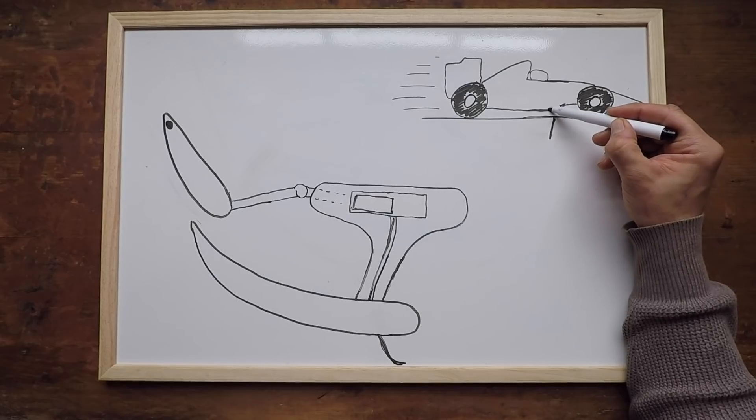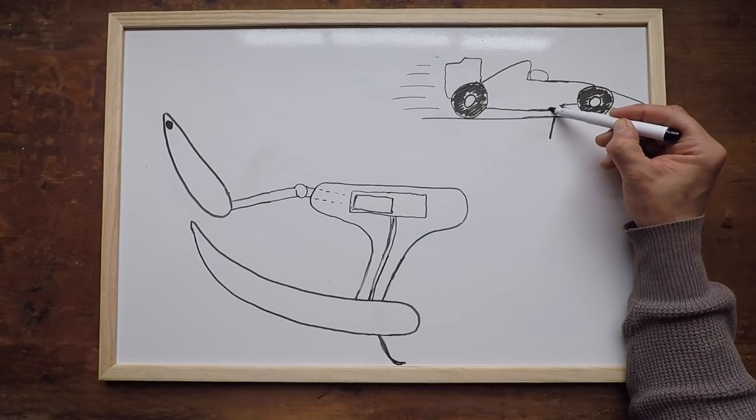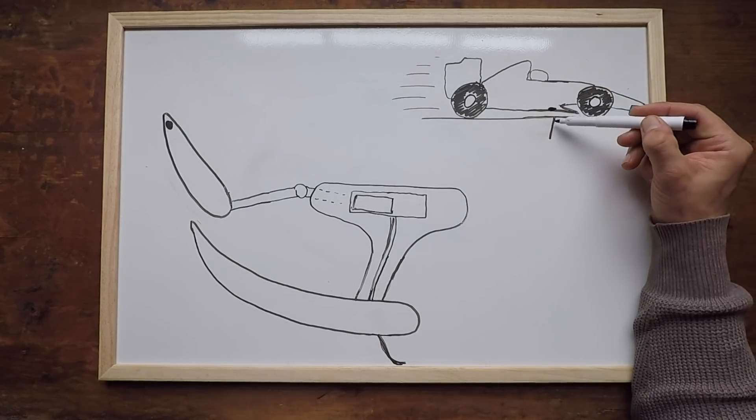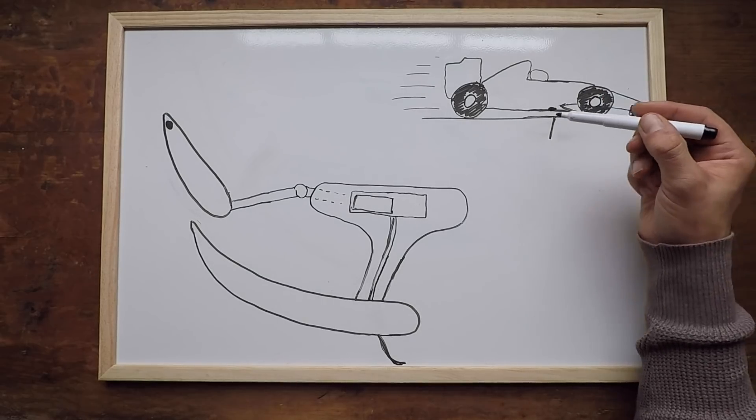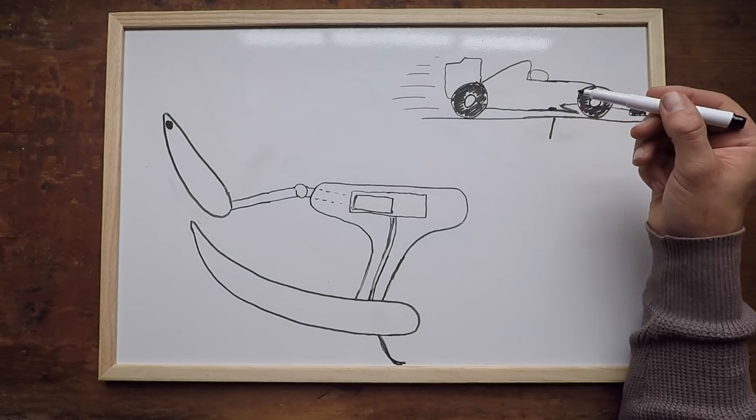On every single Formula 1 car, there's a timing transponder sitting just above the plank around here, and as that car passes over the sensor, it picks up a signal telling the system that a car has passed the DRS detection zone.